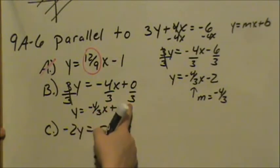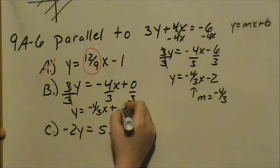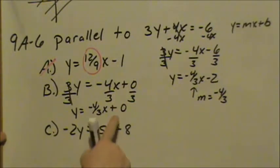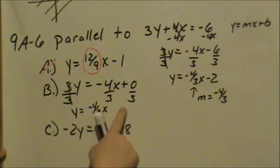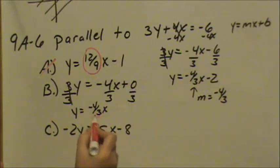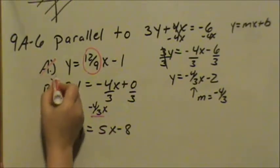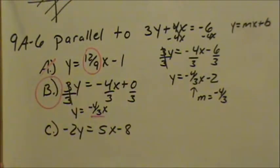You don't have to write the 0, you can write plus 0, but having nothing there is the same thing. So we can see that this does have the same slope. We're looking for slopes of negative 4 thirds, so we know that is parallel.